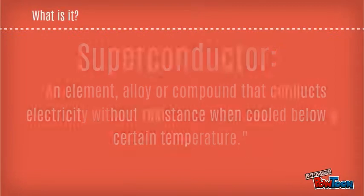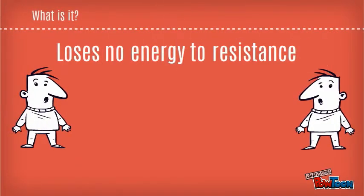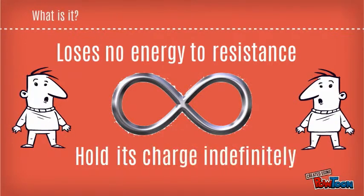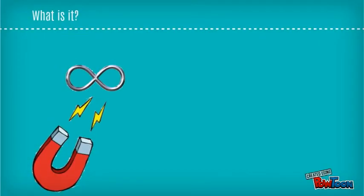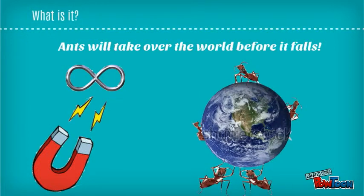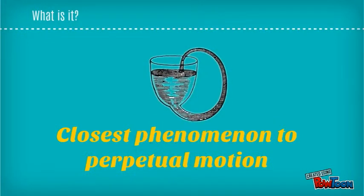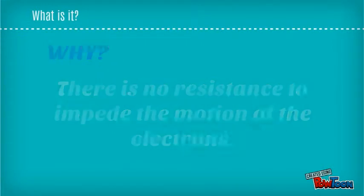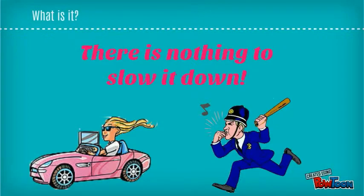If you send current through a superconducting wire, it loses no energy to resistance. If you bend the wire into a loop, it will hold its charge indefinitely. If you levitate it above a magnet, ants will take over the world before it falls. Superconductivity is the closest phenomenon to perpetual motion that we have achieved. Since non-existent resistance does not impede the motion of electrons, once set in motion, electrical current will flow infinitely.